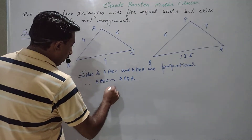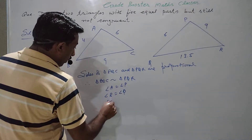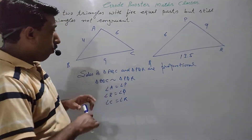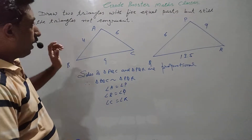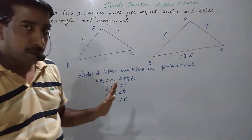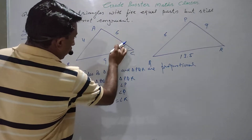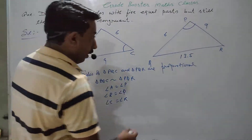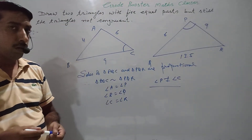Since the triangles are similar, angle A equals angle P, angle B equals angle Q, and angle C equals angle R — three angles are equal. Along with these three equal angles, we observe that sides 6 and 9 appear in both triangles. However, the angle between sides 6 and 9 in triangle PQR is not equal to the corresponding angle in triangle ABC. Therefore, the triangles are not congruent.